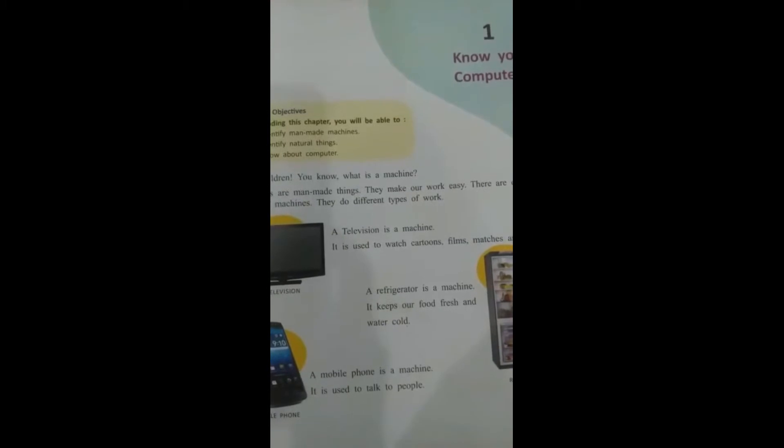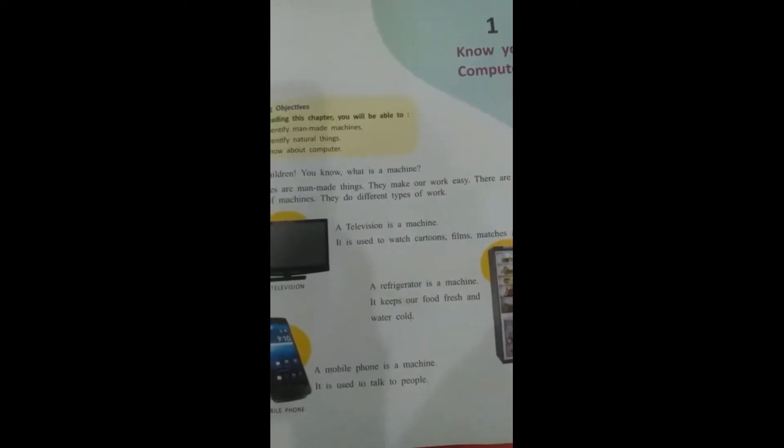Do you know what are natural things? Natural things are those things which are made by Allah, for example earth, sky, moon, sun, etc. And what are man-made things? Man-made things are those things which are made by human beings.